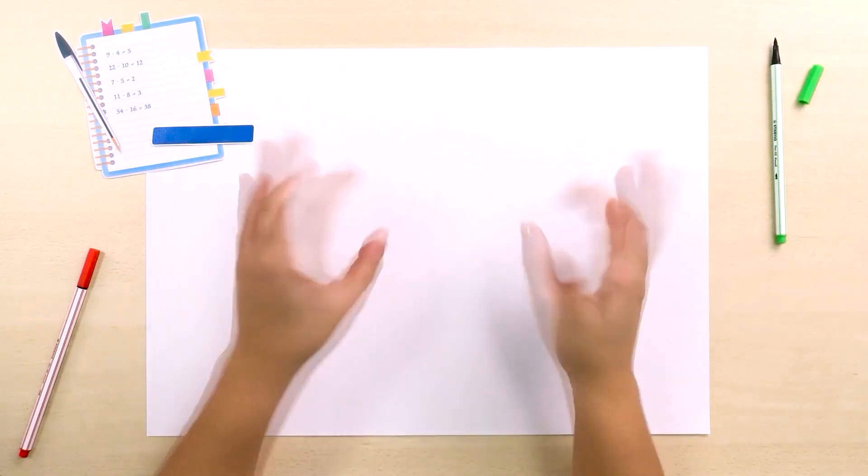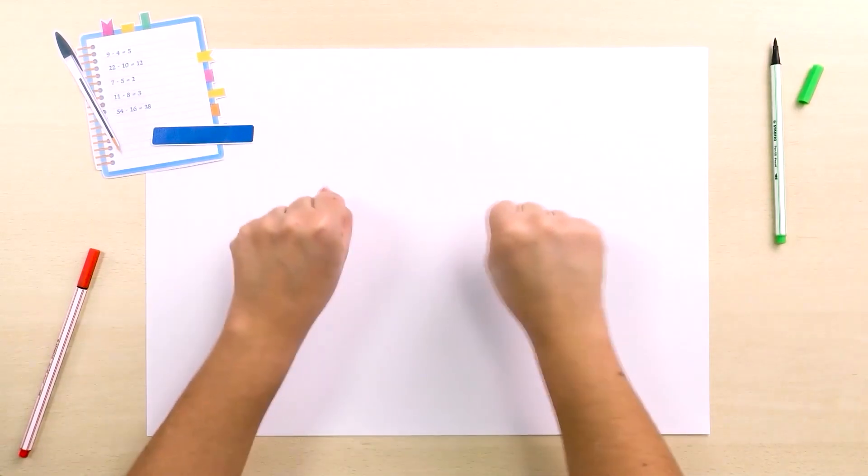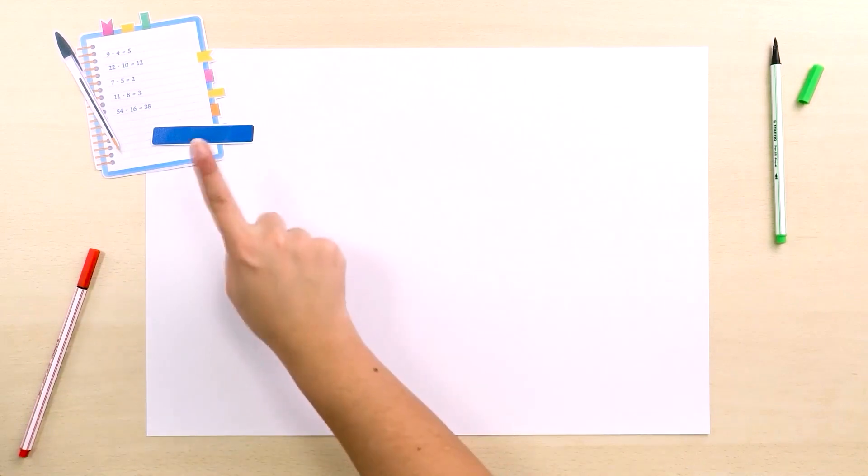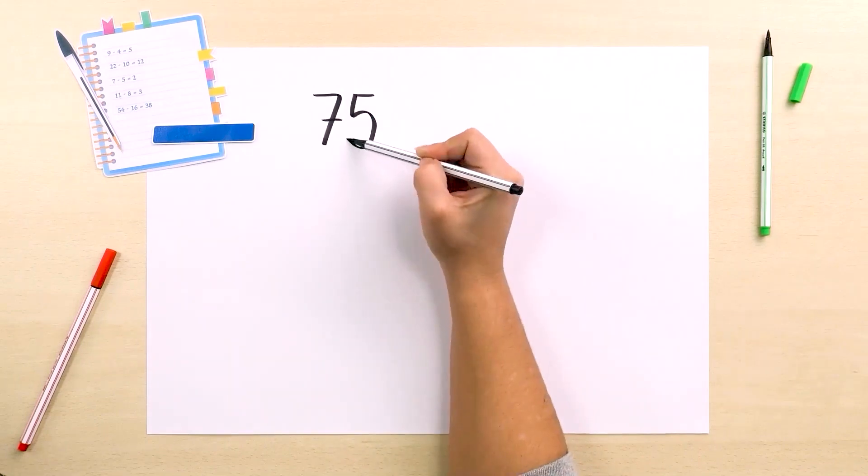Using some examples, let's look at the breaking down strategy for subtracting. Let's begin with the subtraction 75 minus 23.